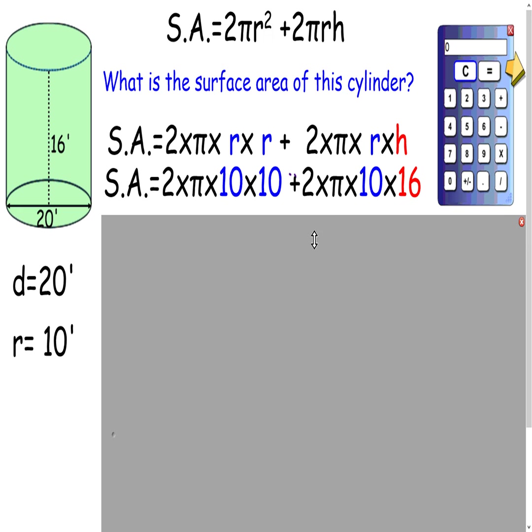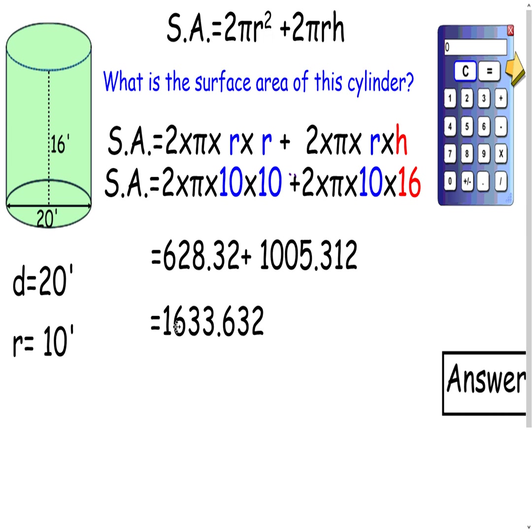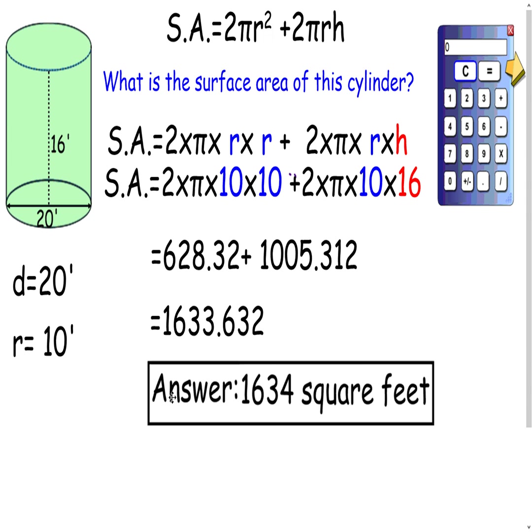And we end up with the two circles together being about 628, and that rectangle, that piece that wraps all the way around the outside, being a little over 1,000. And all together, we add them up. We get 1,633.6, round to the nearest whole number. That 6 is going to make the 3 in the 1 spot round up to a 4. So you have 1,634 square feet.